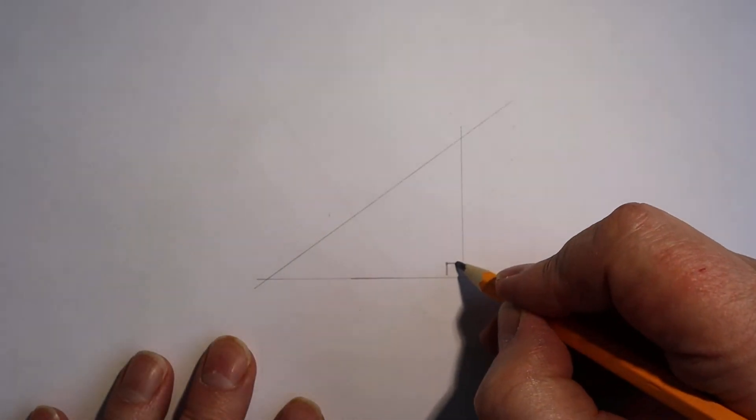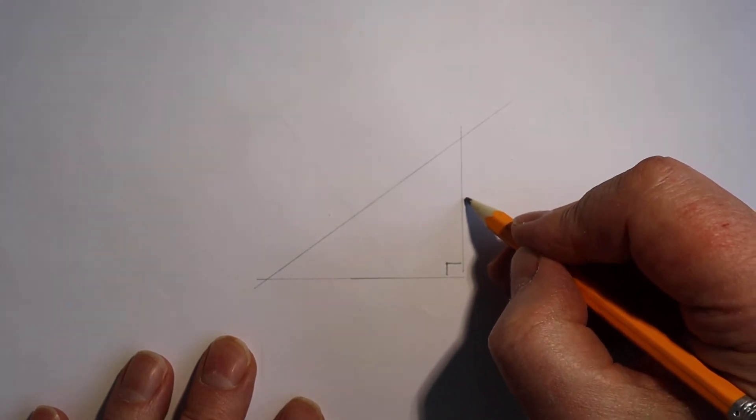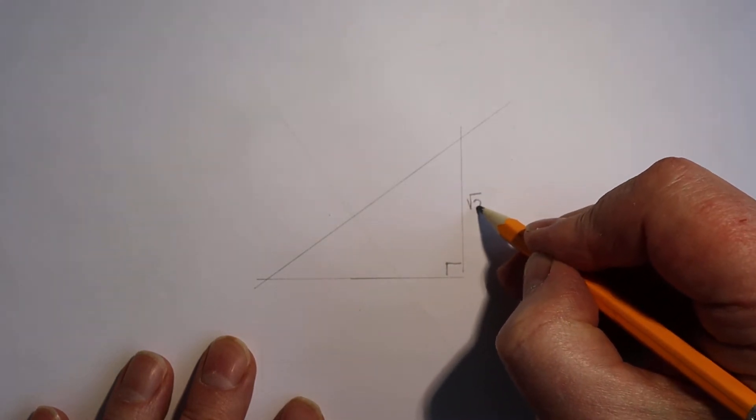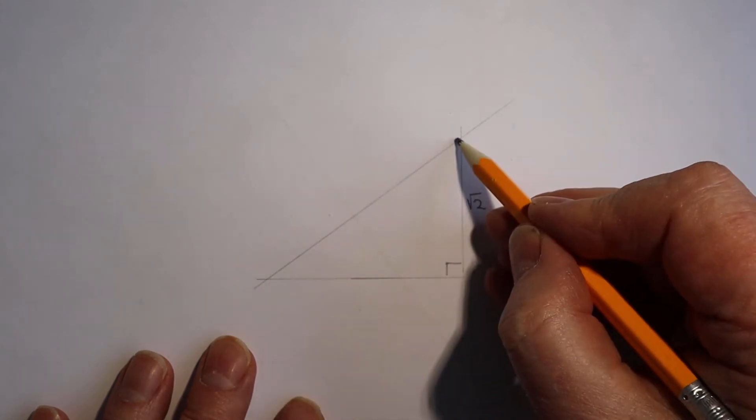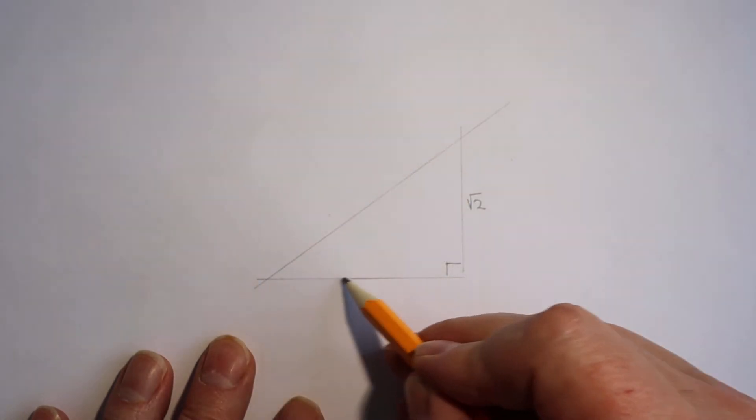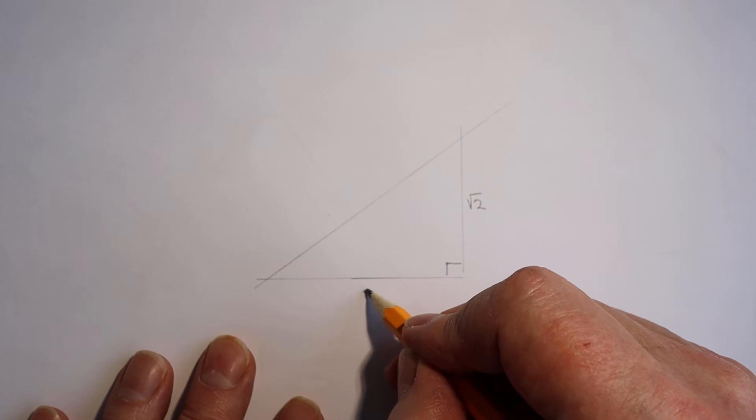If we have a right angle here and this length is root 2, then for this to be root 6 this length would have to be root 4 or just plain old 2.